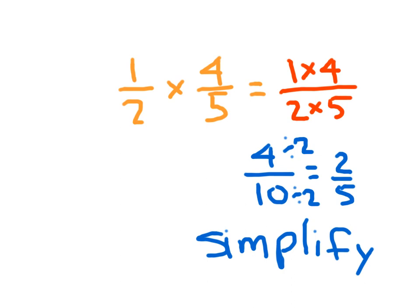So 1 half times 4 fifths is equal to 2 fifths. This makes sense. If you think about it, half of 4 fifths, half of 4 fifths, yeah, it should equal 2 fifths because 2 fifths plus 2 fifths does equal 4 fifths. And wouldn't this right here just be 1 half of 4 fifths? Or 1 half times 4 fifths?